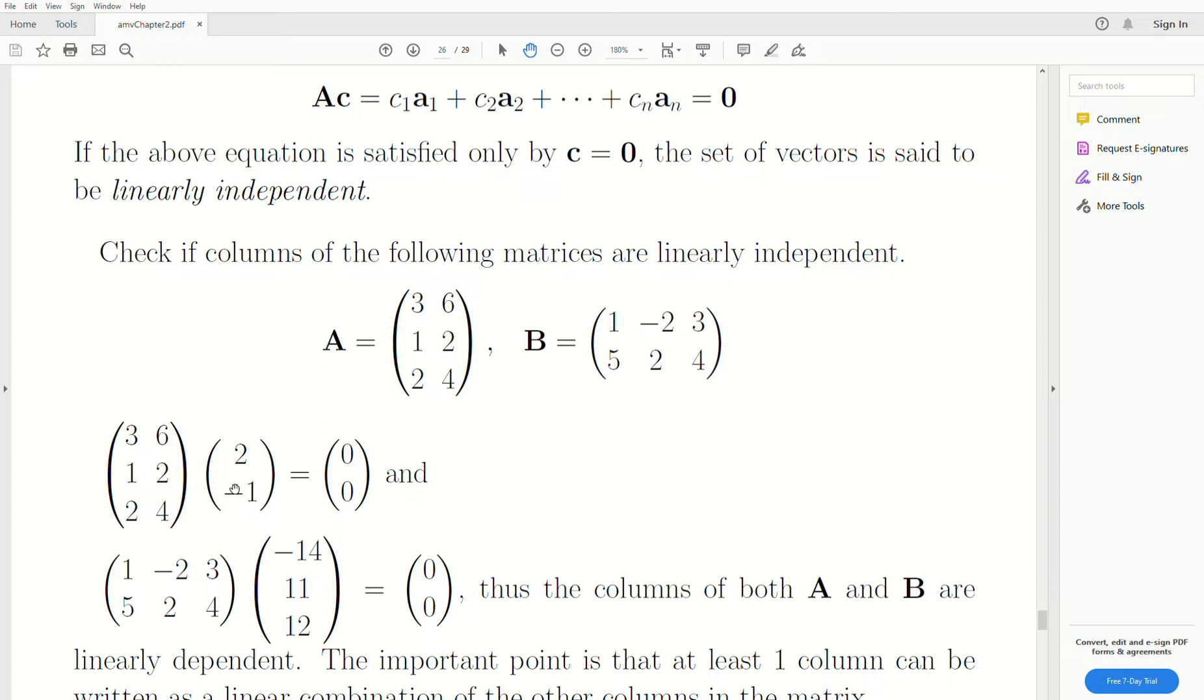Now for A, this vector, the C here, if it's two and minus one, produces this zero vector. So it tells us that the columns are linearly dependent. Now for this matrix B, if we use this as C, then this matrix product creates a vector of zeros. So these columns are linearly dependent.